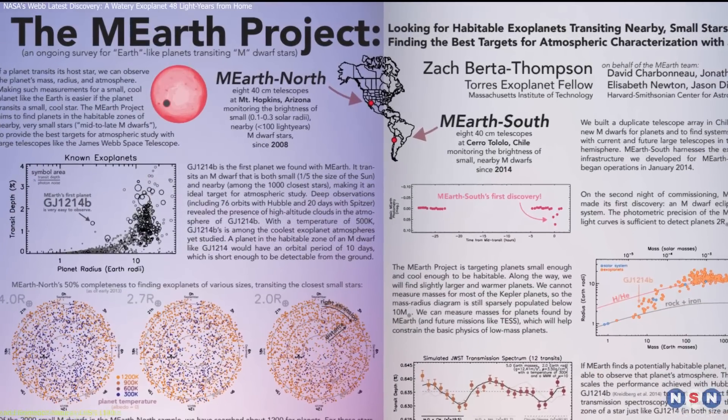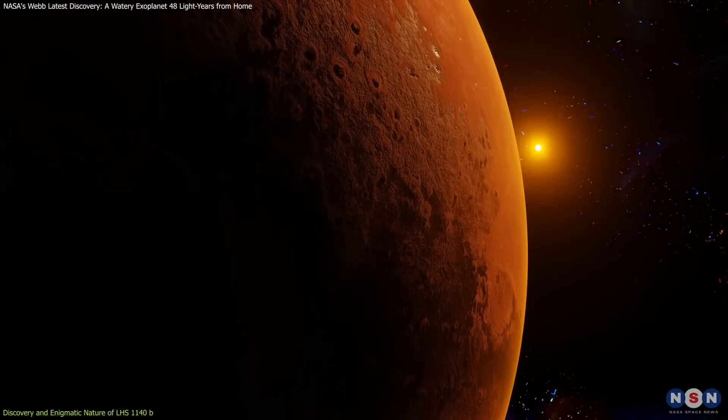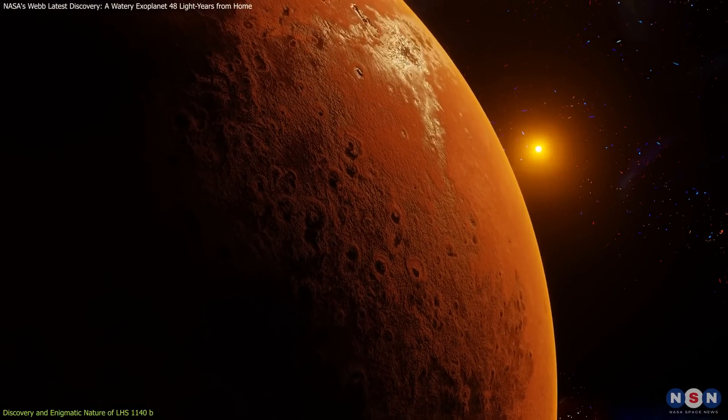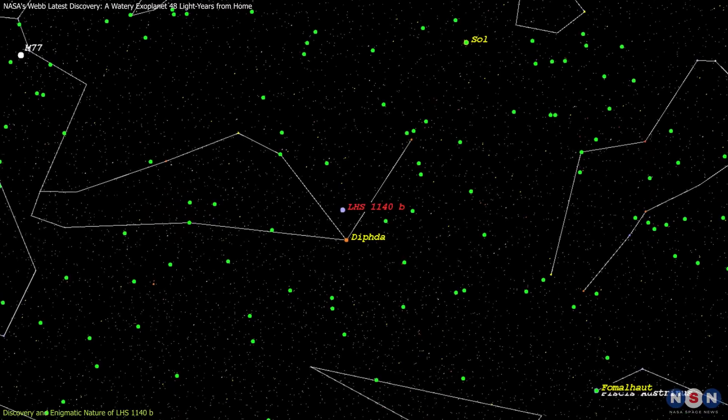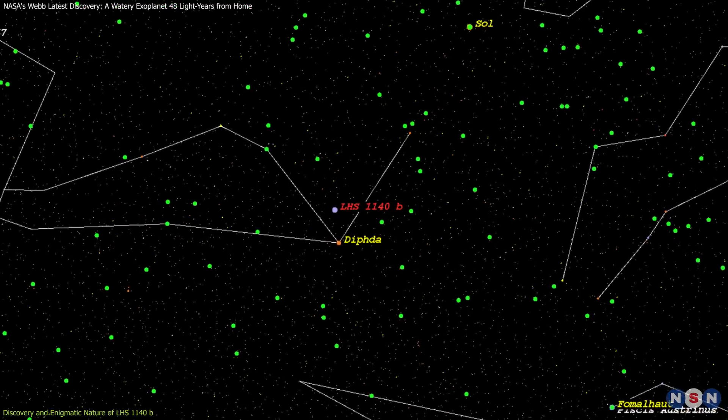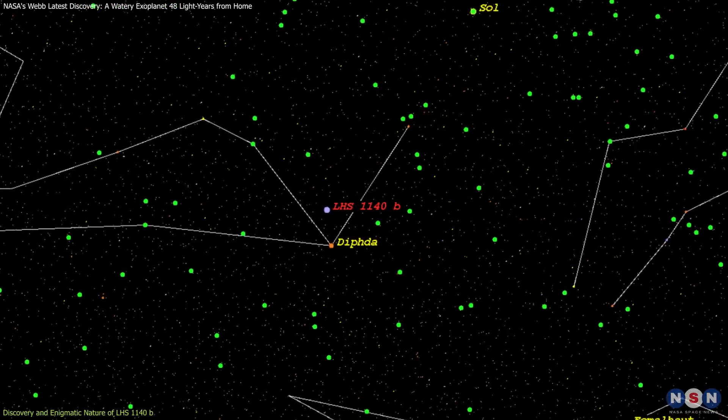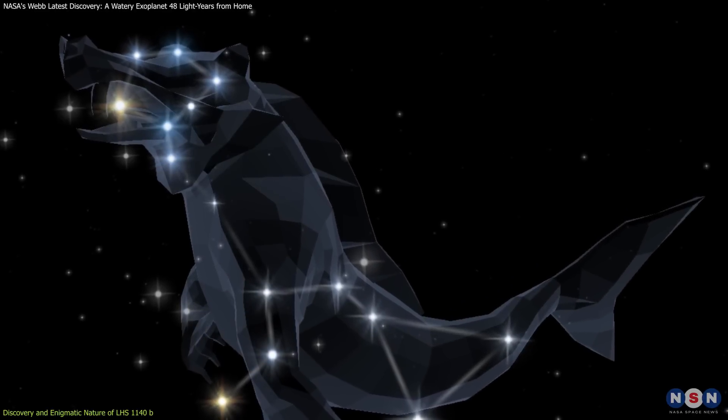Discovered in 2017 by the MEarth project, LHS 1140b quickly became a subject of intense interest among astronomers. This exoplanet is located in a region of the sky dominated by the constellation Cetus, often referred to as the whale.